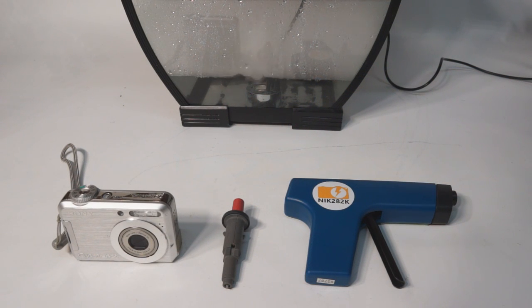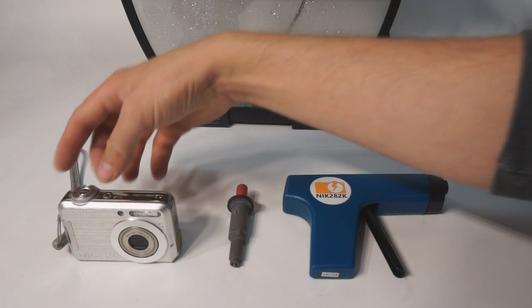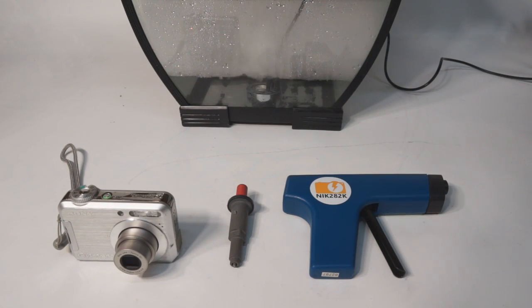From left to right in the front, there's a digital camera, a barbecue igniter, an anti-static pistol, and in the back, an ultrasonic water atomizer. The piezoelectric element in the digital camera is the speaker.